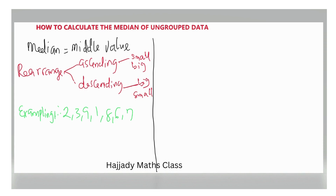From the data set, the smallest value is 1, so we write: 1, 2, 3, 6, 7, 8, 9. There is no 4 or 5, so we skip those. Now to determine the middle value, there is a technique we are going to adopt.